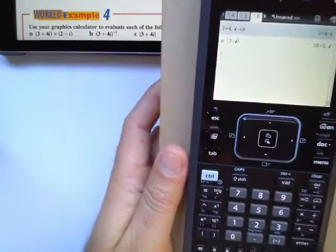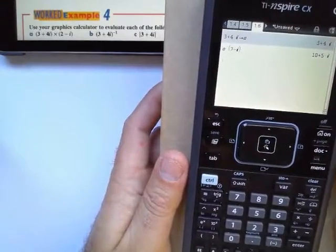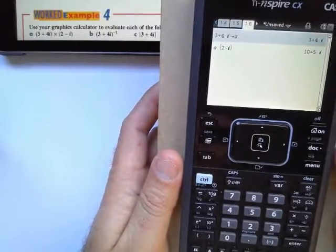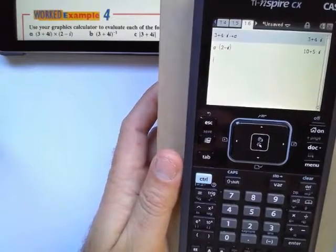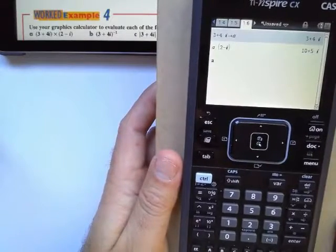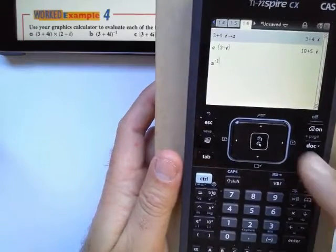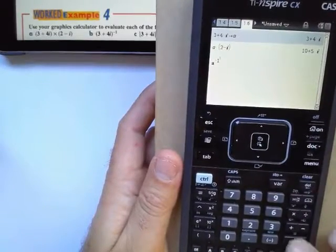To do the second one, that is the inverse of 3 plus 4i. So to find the inverse of 3 plus 4i, I'm going to say a to the power negative 1. Enter.